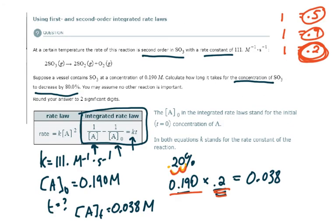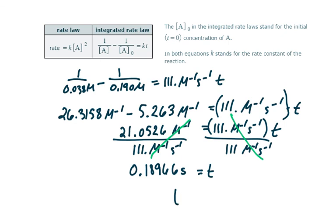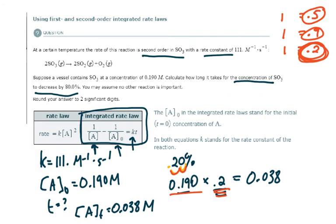They want our answer to two significant digits. So time is equal to 0.19 seconds. So it will take 0.19 seconds for the concentration of our reactant to decrease by 80%. This is, as you can imagine, this reaction is happening very quickly. And we see that because K is fairly large. It's 111. It's not a very small number. All right.